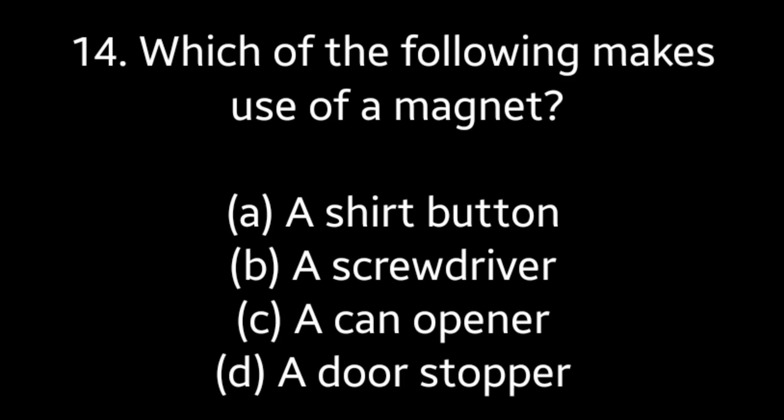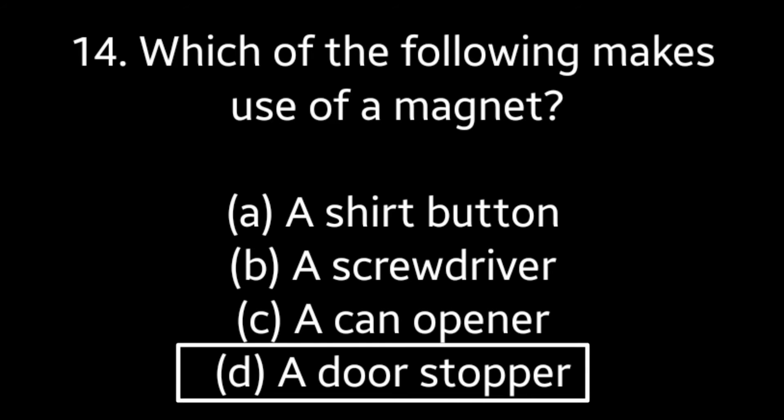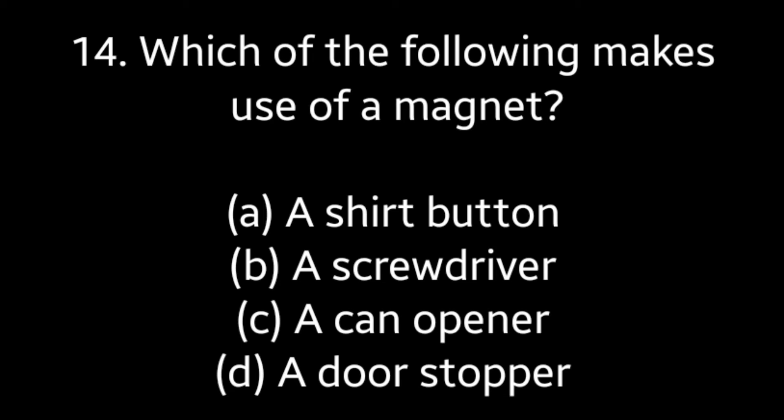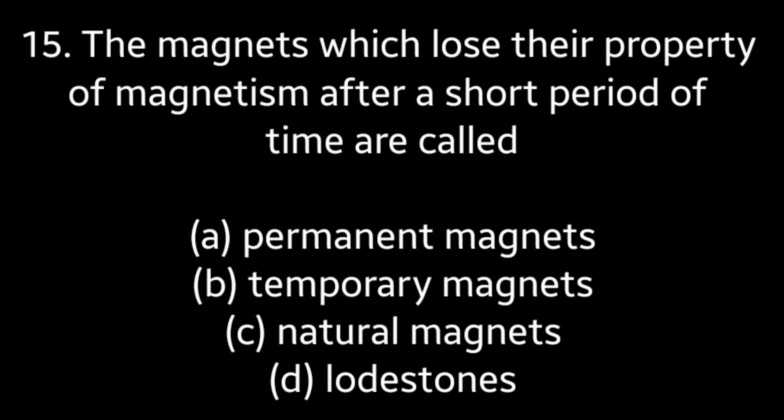Question number fourteen: which of the following makes use of a magnet — a shirt button, a screwdriver, a can opener, or a door stopper? Answer is option D: a door stopper. Question number fifteen: the magnets which lose their property of magnetism after a short period of time are called — permanent magnets, temporary magnets, natural magnets, or loadstones?